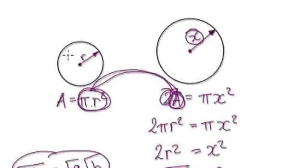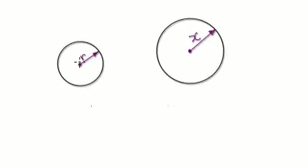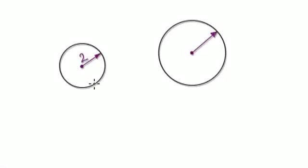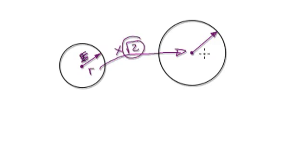So you can see that to obtain our new radius, we should multiply the old radius by the square root of 2. If you multiply the radius by the square root of 2, then it will give you an area that is twice as big. Let's test it out.